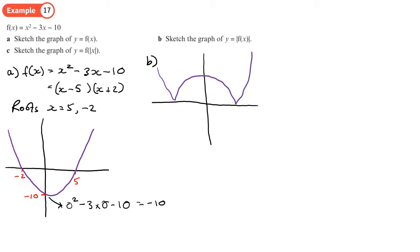So it goes like that, then it goes like that, then it goes like that. And these points here are going to be the same, negative 2 and 5, and this point up here is going to be plus 10 because it just flipped up from negative 10 on the first one.